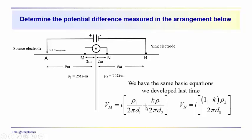These are the basic equations we've been using. At M, the potential relative to A consists of a direct path — rho 1 over 2 pi D1, where D1 is 7 meters (9 minus 2) — plus a reflected component. We go from A over to the boundary and back, so the reflected path distance is 11 meters. When we measure at N, we have a direct path, and there's a transmitted component with 1 minus K coming through medium rho 2, where D3 equals 11.